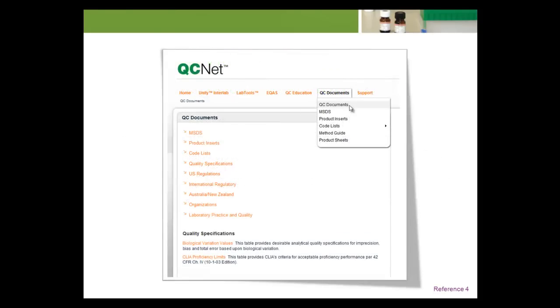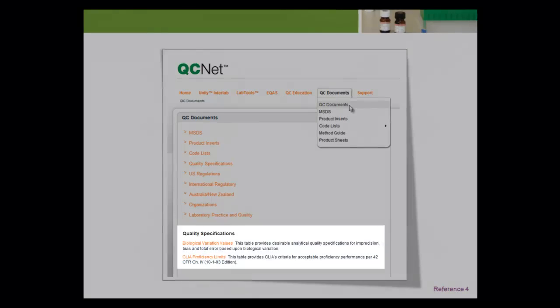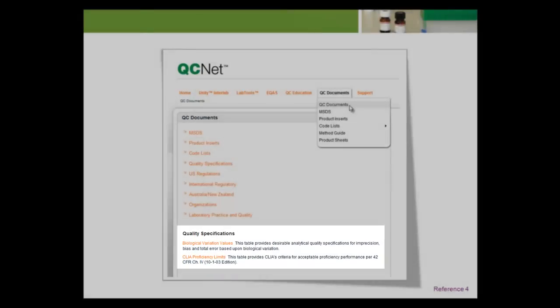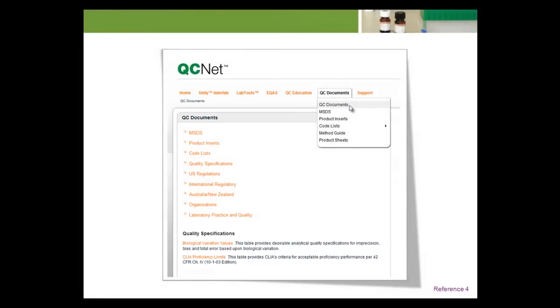A database of estimates for the components of biological variation has been constructed by Dr. Ricos and her peers. The 2010 edition of the database contains the CVW estimates for about 400 analytes that can be used to set limits for analytical imprecision. The database can be found in the QC Documents section at www.qcnet.com.